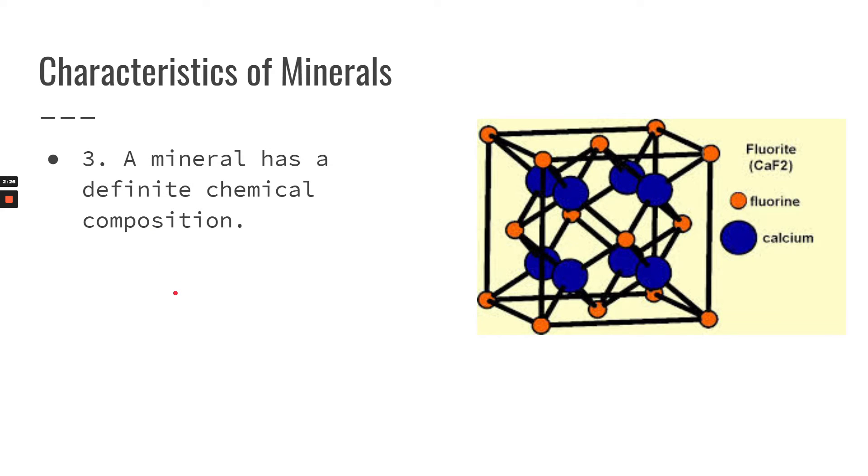Then we have number three. A mineral has a definite chemical composition. So I want to look here at this fluorite drawing here. Fluorite is made of calcium. So it's CaF2. That means for every calcium atom, there are two fluorine atoms. That is a definite chemical composition. This mineral fluorite is always made of one calcium atom per every two fluorine atoms.